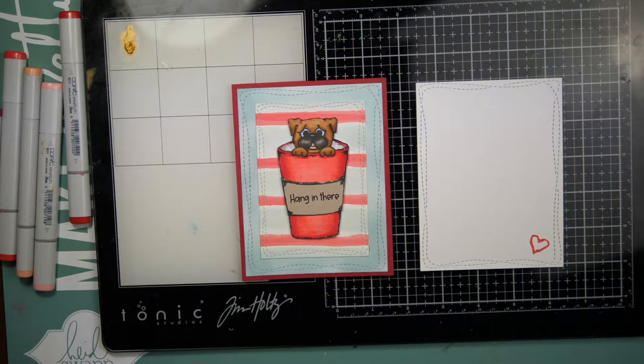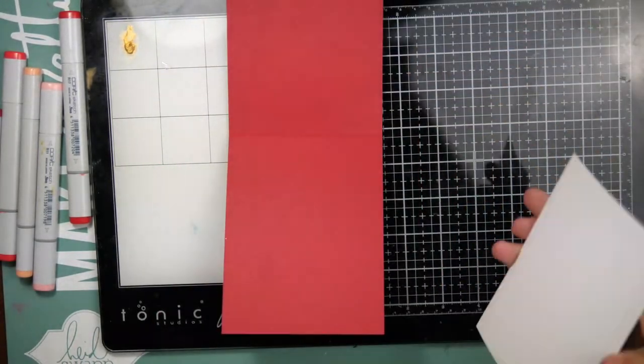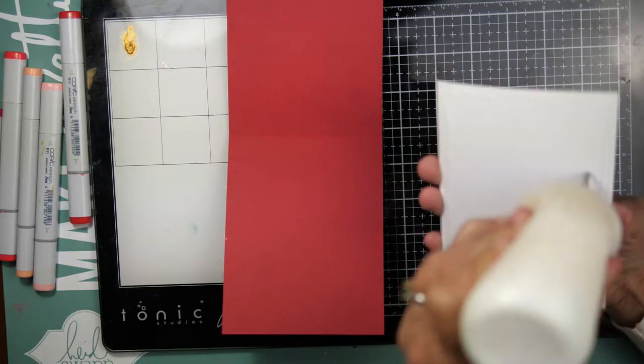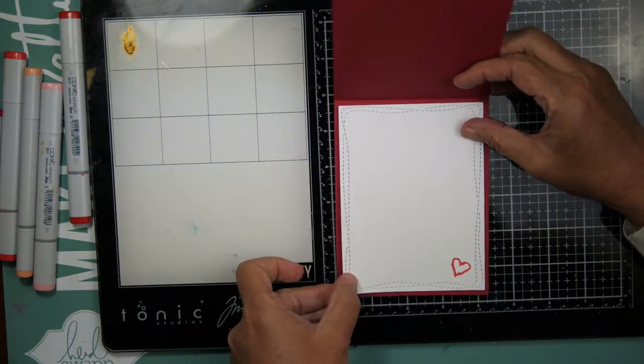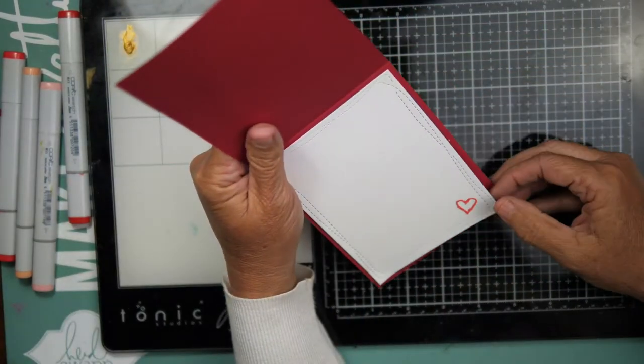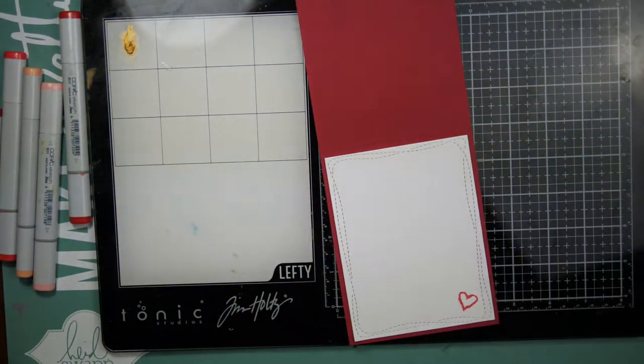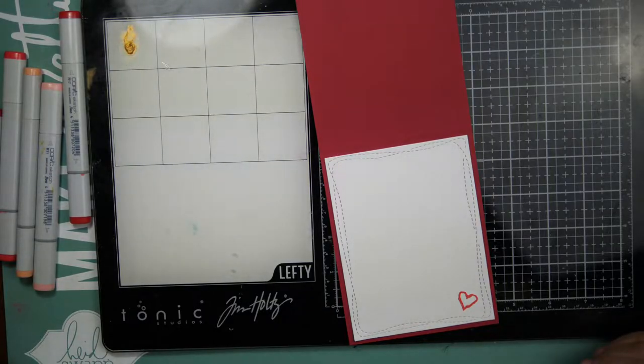I wanted to do an inside panel, so I cut another piece of Neenah Solar White 80-pound with the larger Wonky Stitched rectangle from Simon Says. And then I added one of the cute little hearts to the inside of that panel as well, because the red would be a little bit hard to write on. So it has that cute little heart.